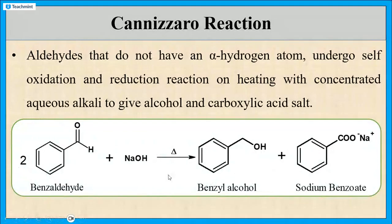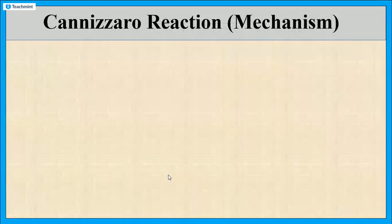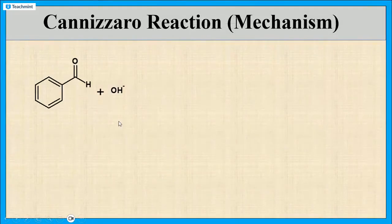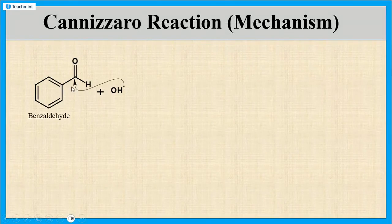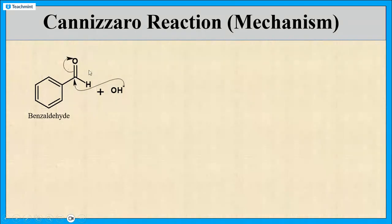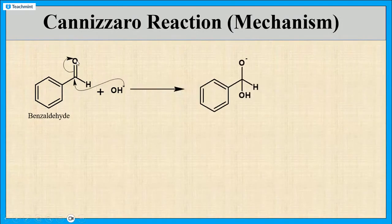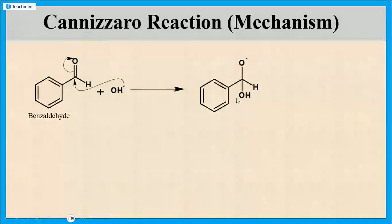This is the Cannizzaro reaction. Now let us see the mechanism of this reaction. First, we take benzaldehyde, which reacts with the hydroxyl ion of the base. The hydroxyl ion attacks the carbonyl carbon of the aldehyde. After that, the breakage of the pi bond takes place, so here we get the intermediate product. The double-bonded O becomes O⁻, and a bond forms between this carbon and the hydroxyl ion (OH), with H remaining as is. So here the formation of an anionic intermediate takes place.